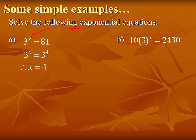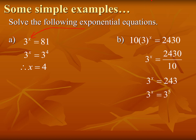Here's another one that might look like trouble at first. The big first step for tougher examples is to isolate the exponential part. We've got 10 times 3 to the x, so we divide by 10 and get 243. Then by trial and error or calculator: 3² is 9, 3³ is 27, 3⁴ is 81, 3⁵ is 243. So x equals 5.